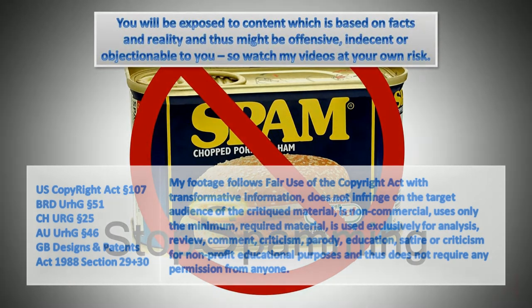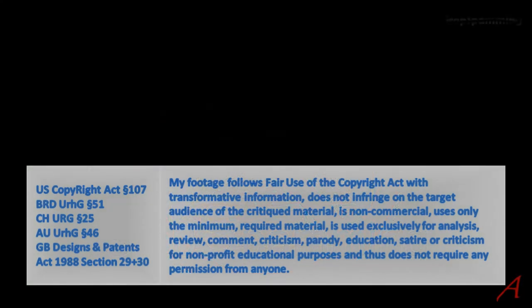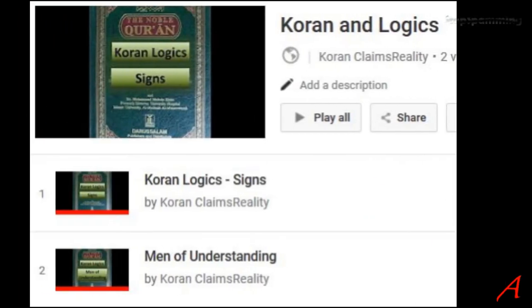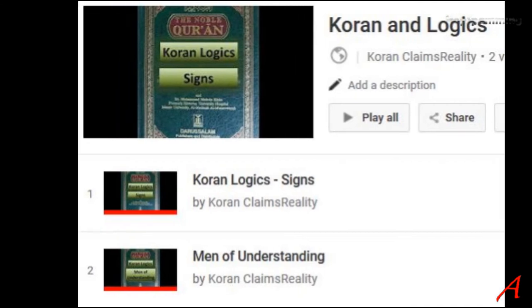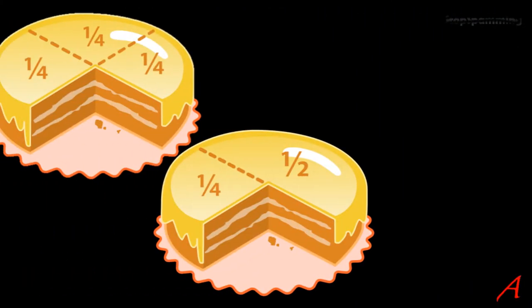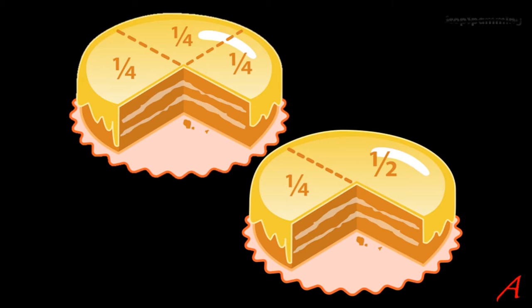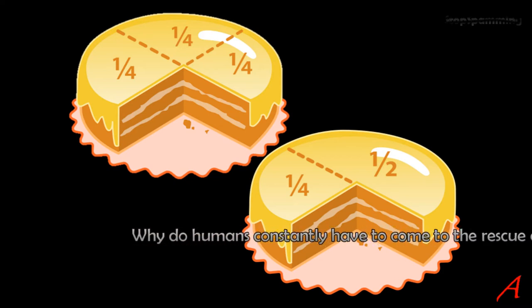Hi guys, welcome to the next episode in the series Quran Logics, where I take a very quick look at the logics used and deployed in the Islamic Quran. In this video, I'm going to look at some basic arithmetic — fractions. In the Quran, there's hardly anything that is explicit or precise in the form of instructions for anything. And if there are, they're faulty and wrong. Why can't a god do basic arithmetic?